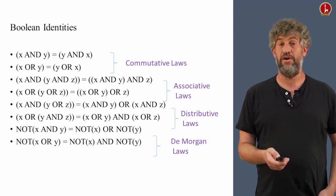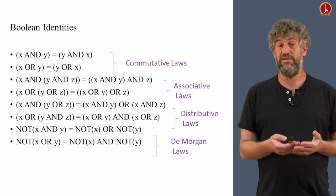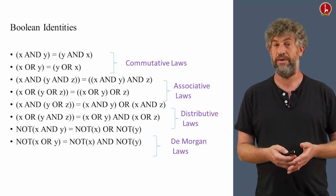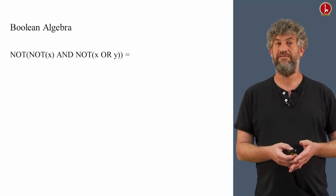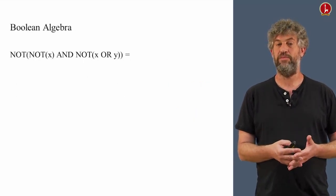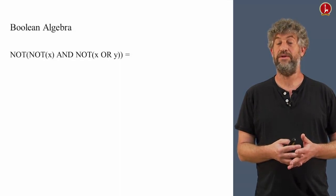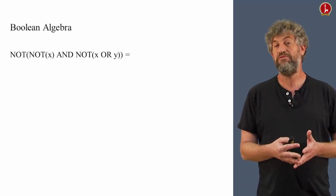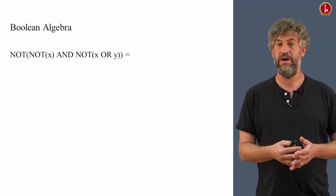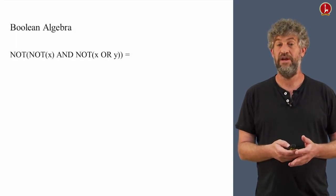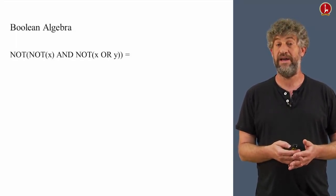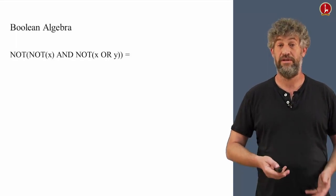There are a bunch of other laws and we can use them to actually do manipulations on Boolean algebra. For example, once we have a formula, for example, the formula that you see here, NOT(NOT(x) AND (NOT(x) OR y)), we can now start applying some of these identities to change its form, to simplify it, or to bring it into a different format.